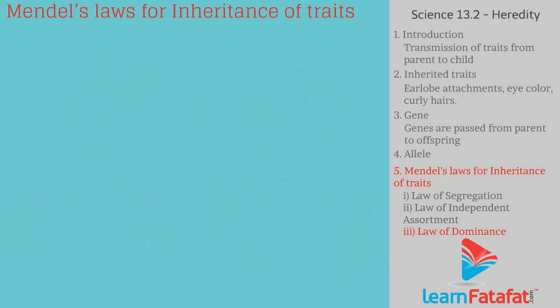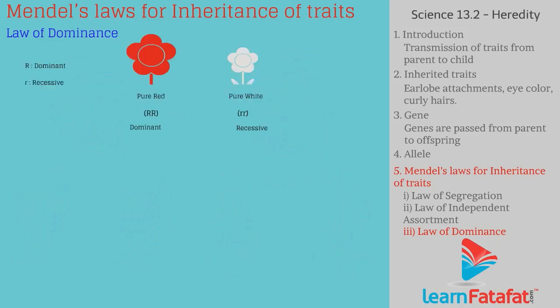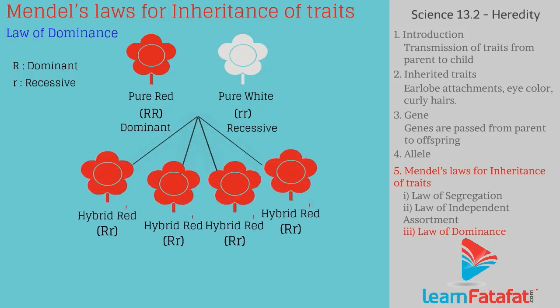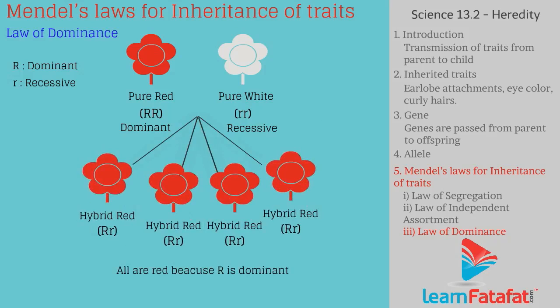Law of Dominance: It states that the dominant allele always masks the recessive allele. In a pair of alleles, if one allele is dominant, then only the effect of the dominant allele shows up in the organism.